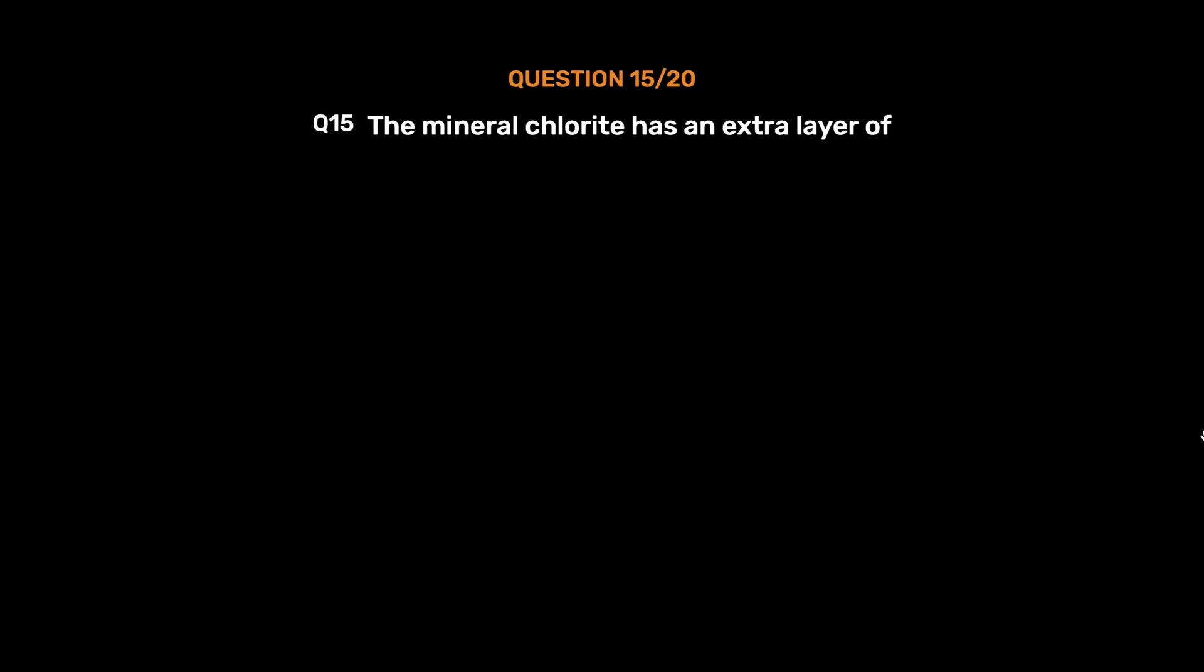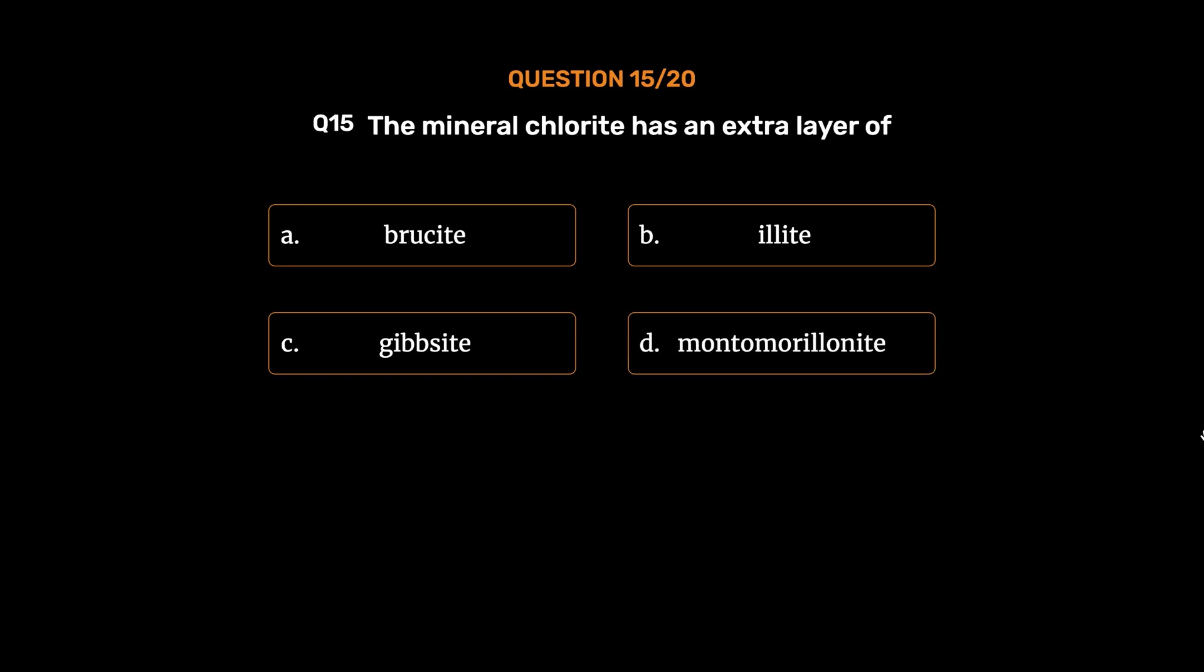Question number 15. The mineral chlorite has an extra layer of: option A, Brucite; option B, Illite; option C, Gibbsite; option D, Montmorillonite. The correct answer is option B, Illite.